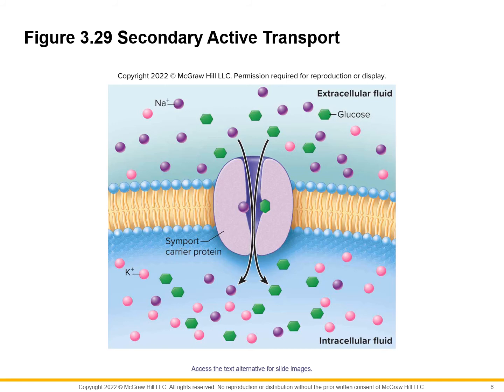Secondary active transport, instead of ATP, is going to require a carrier or some other key to unlock this. This is sodium — talking about how there's a sodium transport that helps glucose get pumped in. While it doesn't cost ATP, it does cost the ions as we move through.